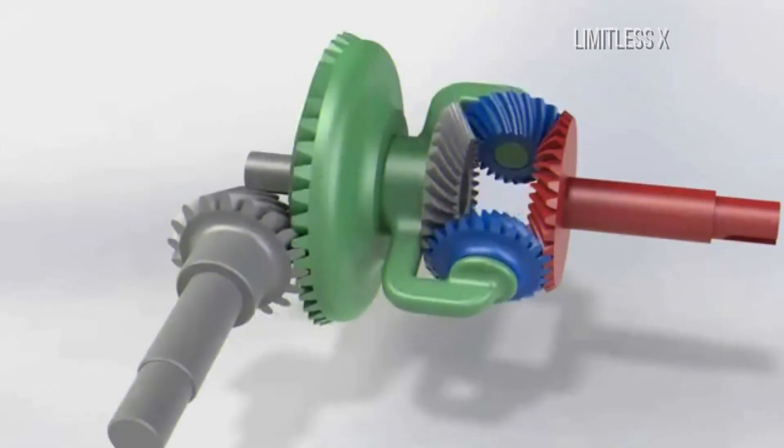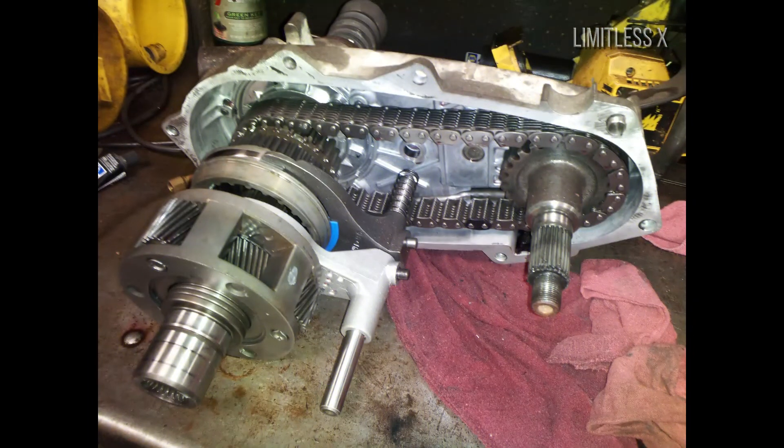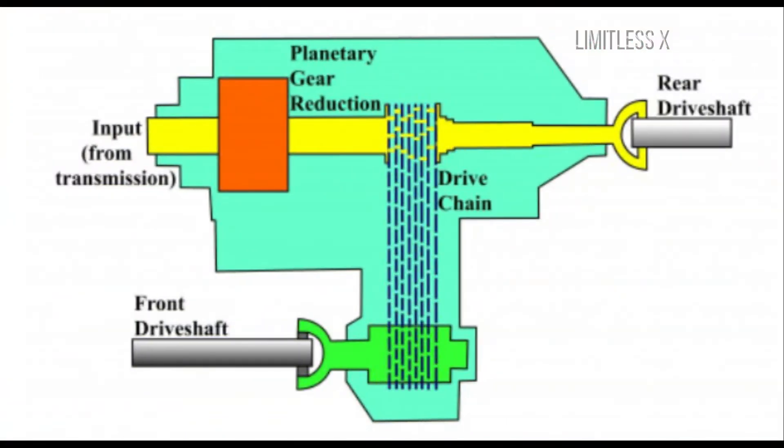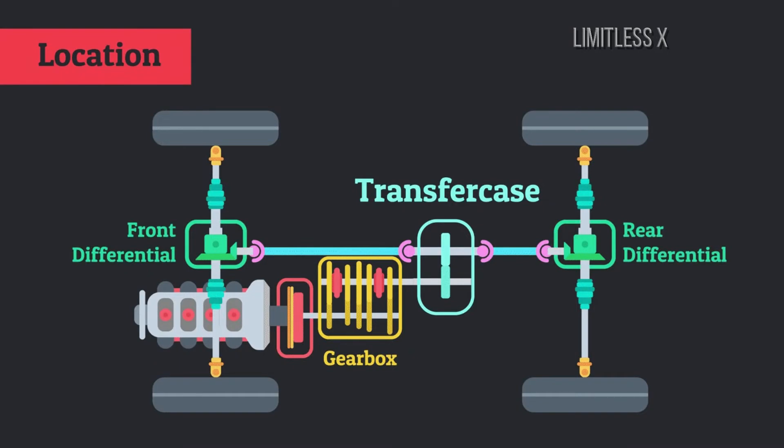Transfer case. Owing to its longitudinal configuration, the engine can only supply power to the rear wheels directly. In order to power the front wheels, a chain-driven arrangement known as the transfer case is employed. The transfer case connects to the front differential by means of a driveshaft, which then supplies power to the wheels.